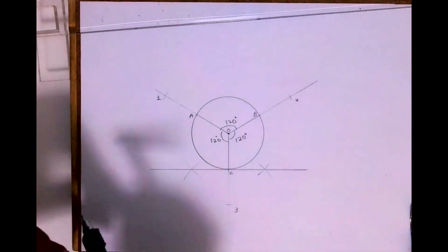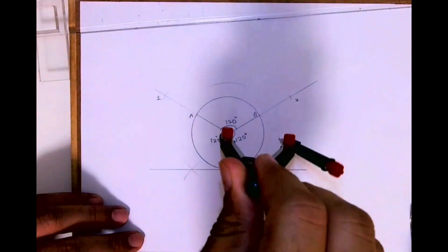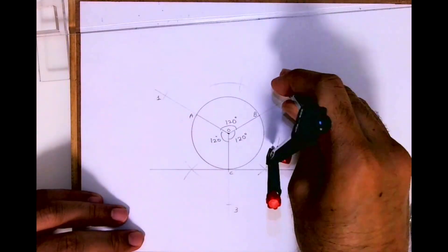Same way I will bisect O-2. Take more than half, cut from O then cut from two.